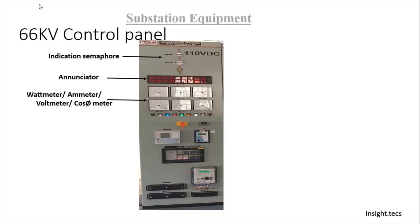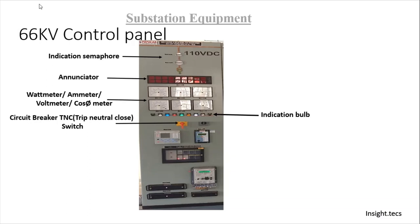Also, the power factor meter is there. Then, there are indication bulbs which indicate whether the circuit breaker is on or off, whether the spring of the circuit breaker is charged or not — such types of indication bulbs are present on the panel.